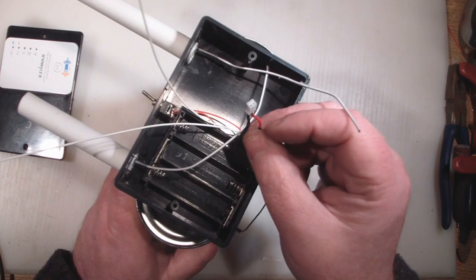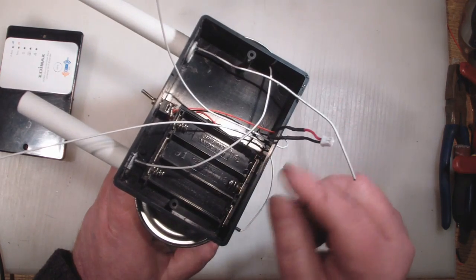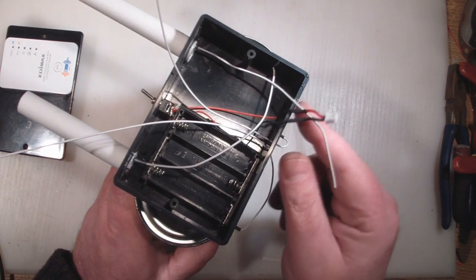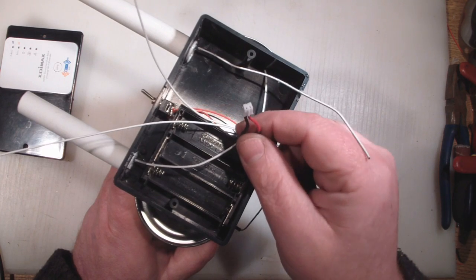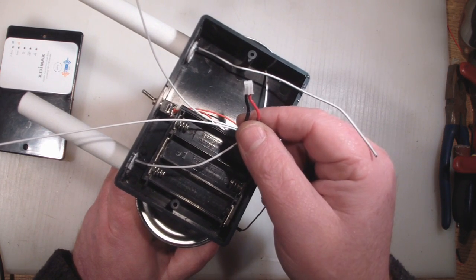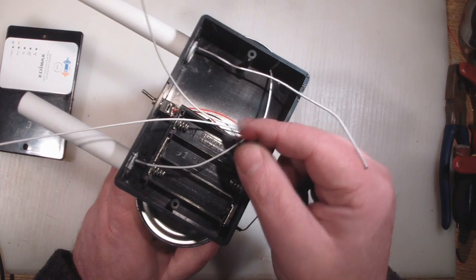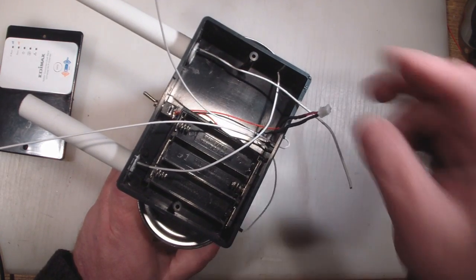For the positive and negative coming off the battery, I've cut off the connector that was used in the original router and just soldered the actual connector in there so it's easier for us to connect to the actual board.